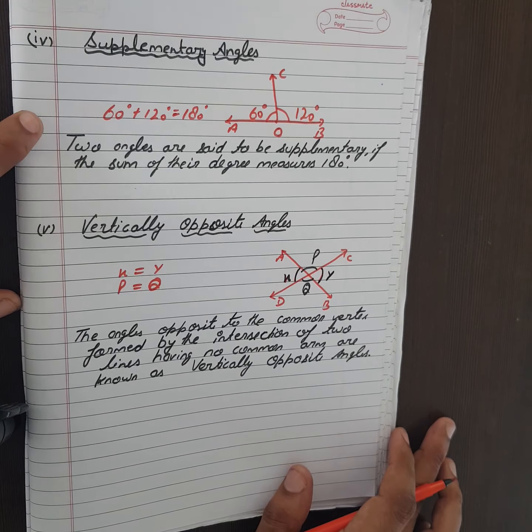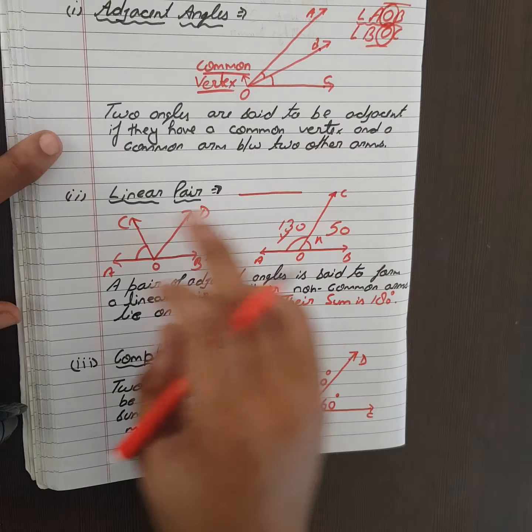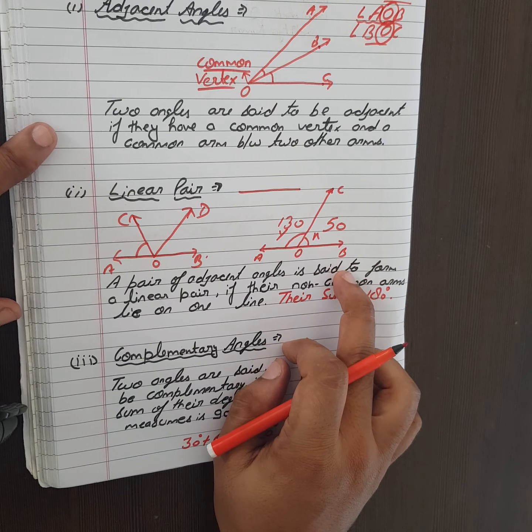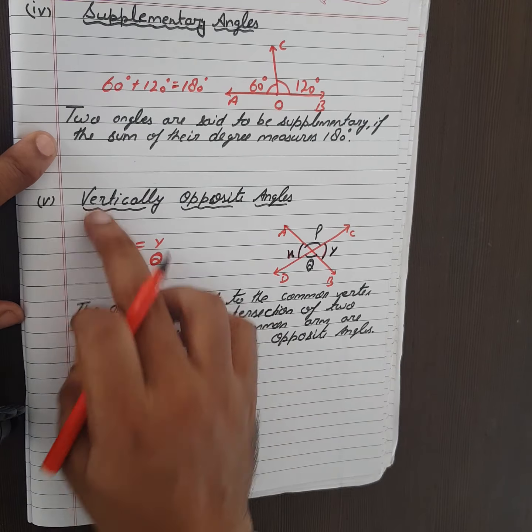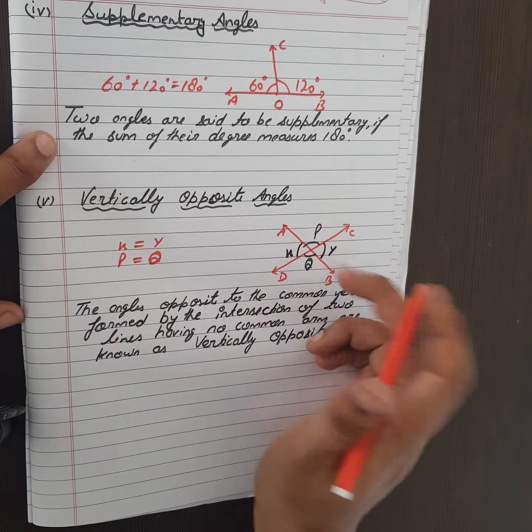Next one: linear pair. A pair of adjacent angles is said to form a linear pair if their non-common arms lie on one line. If we form a linear pair, like you can say this one is x and this one is y, their sum is 180. If that is 50, so this will be 180 minus that, means 130.